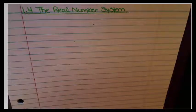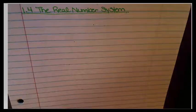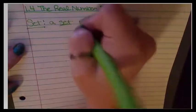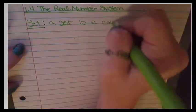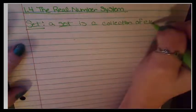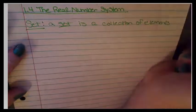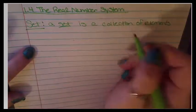When we talk about the real number system, we are going to be talking a lot about sets. So we need to first define what a set is. A set is a collection of elements. A set is anything that you want to group up. It can be a set of cars.